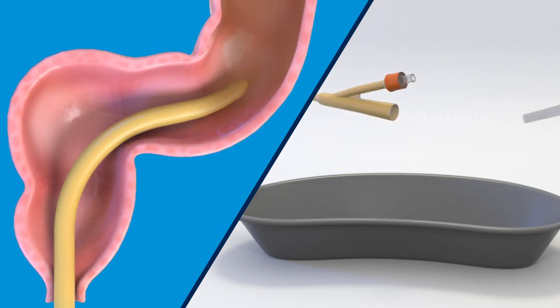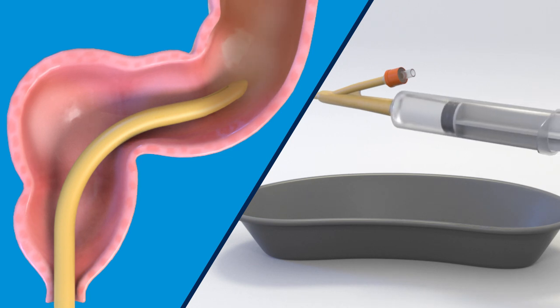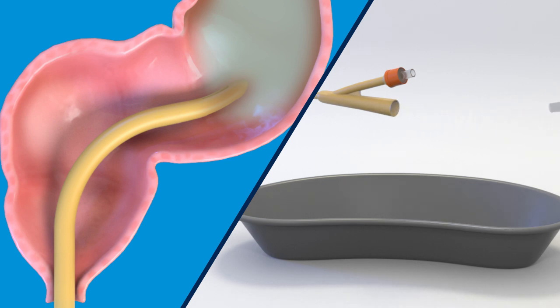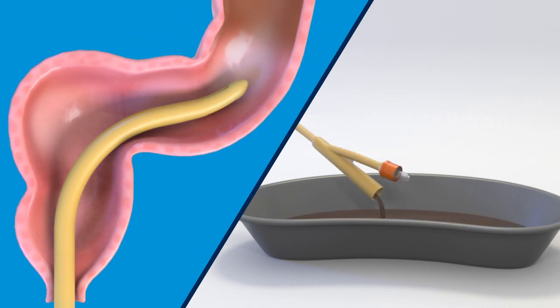Connect the syringe to the catheter and inject the 10 to 20 milliliters of saline. Disconnect the syringe and let the saline and any stool drain into the empty basin.